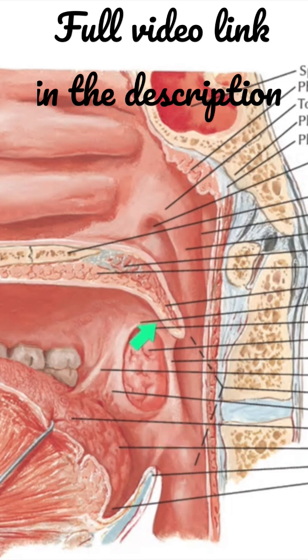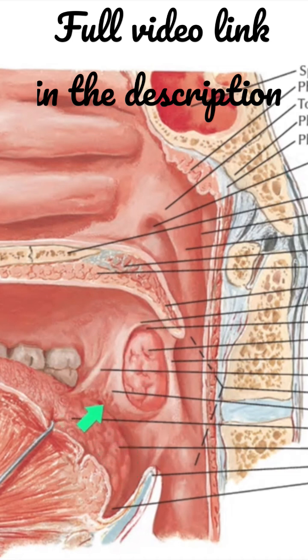The apex of the tonsillar sinus is formed by the soft palate, where both arches meet, and the base is formed by the dorsal surface of the posterior one-third of the tongue.